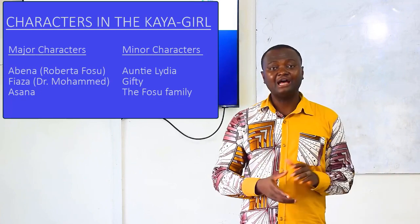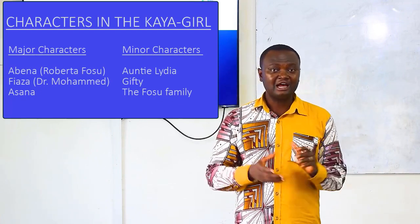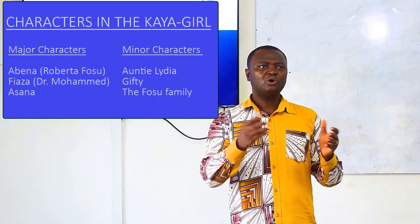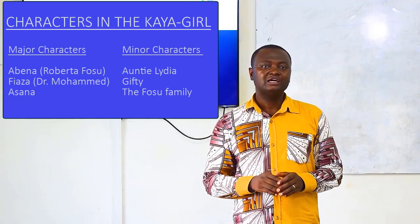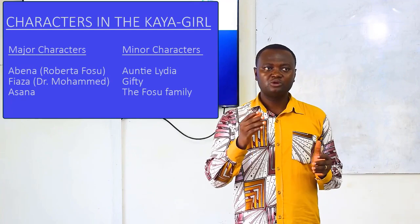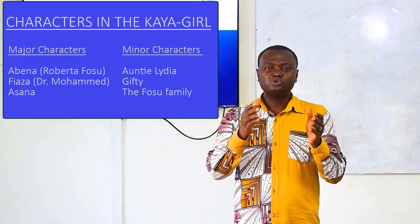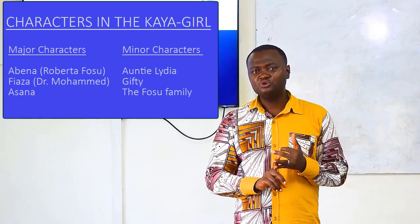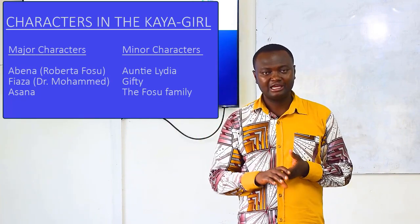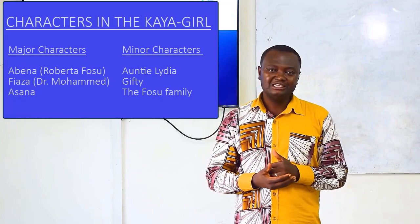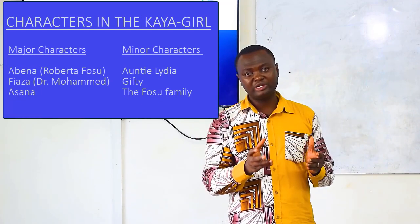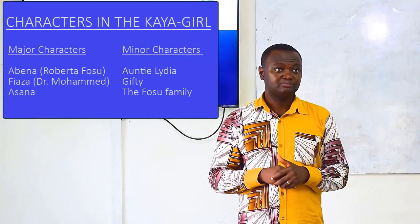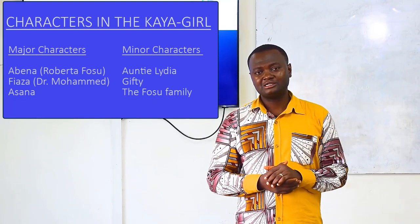We have Abner as a major character, and Faiza — these two are the best of friends and the whole story is about them. You can also talk about Asana, who is Faiza's sister. We can talk about the Fosu family: Michael Fosu, Stephen Fosu, and also their sisters and parents. We can talk about Aunty Lydia, whom Abner visited at Makola during her vacation, and Gifty, who works with Aunty Lydia at a shop.